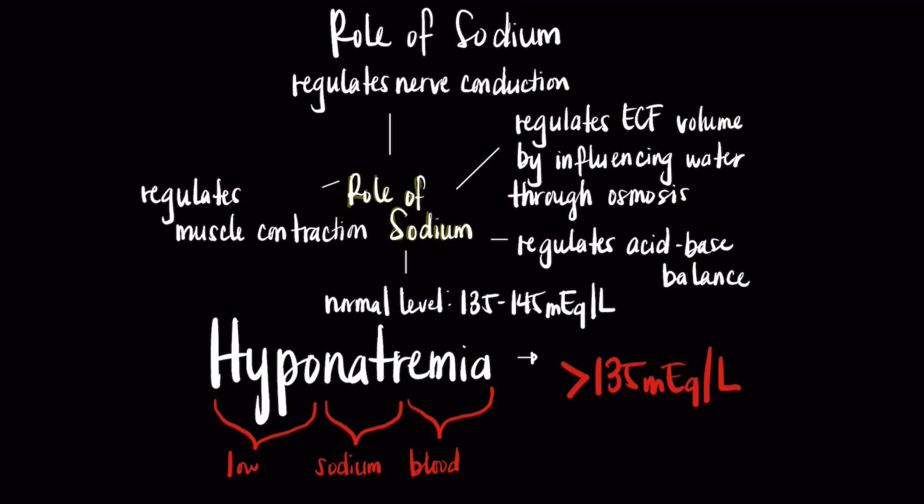When you break down the word hyponatremia: hypo means low, NATR means sodium, and emia means in the blood, thus meaning low sodium in the blood.